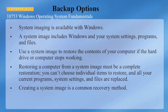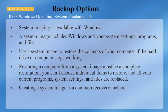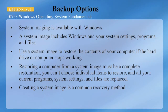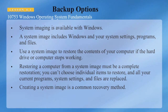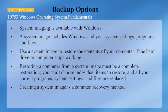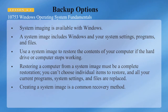System imaging is available with Windows. A system image includes Windows, your system settings, programs, and files. You can use a system image to restore the contents of your computer if the hard drive or computer stops working. Restoring a computer from a system image must be a complete restoration — you cannot choose individual files to restore, and all current programs, system settings, and files are replaced. Creating a system image is a common recovery method.